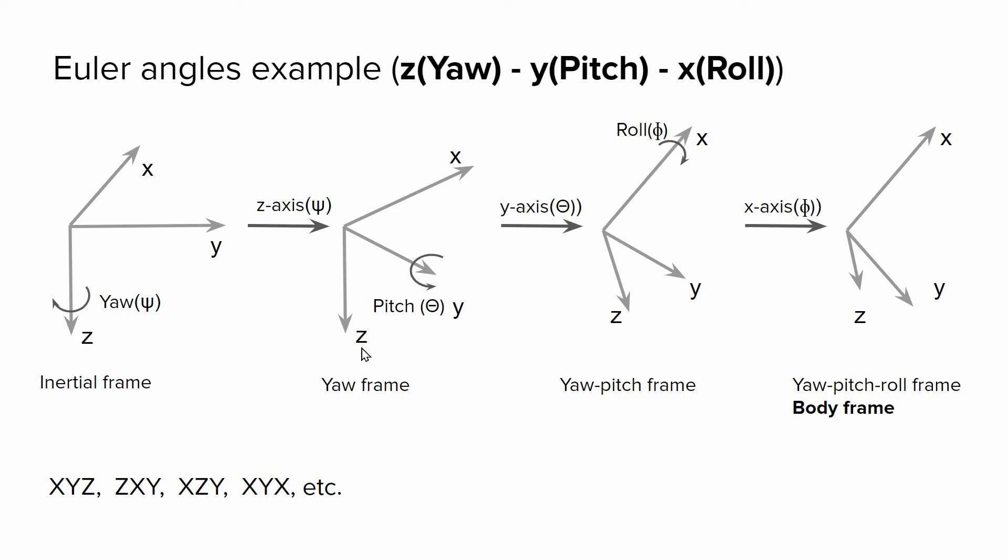So by tuning yaw, pitch, and roll angles, we can map from inertial frame to the body frame, or vice versa.